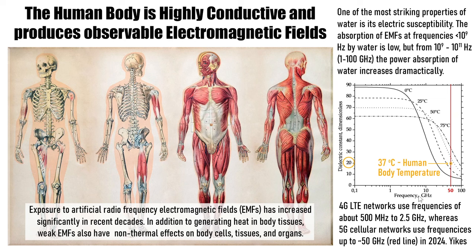5G cellular networks use frequencies up to 50 gigahertz — that's the red line marked on the chart. Here we have human body temperature at 37 degrees Celsius. Looking at the dielectric constant — the ability of water to absorb this energy — you can see just how much different it is compared to 1 gigahertz. 4G is kind of right in the zone, but 5G puts us on the bottom of that absorption curve, representing a huge increase in our ability to absorb that energy. That's why so many people are feeling so many health effects just in the past few years.